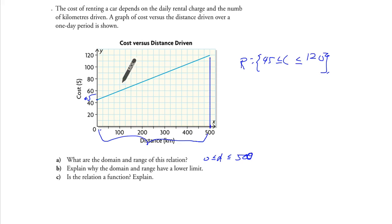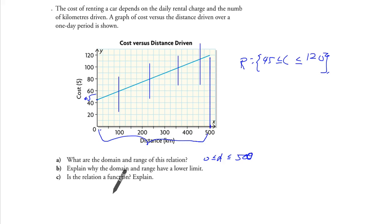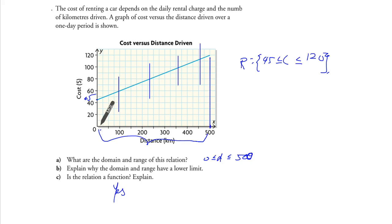Is this relation a function? Yes. The vertical line test — does it pass? Yes, it does. You can say it because of the vertical line test, or say that for every value of distance, there's only one value of cost.